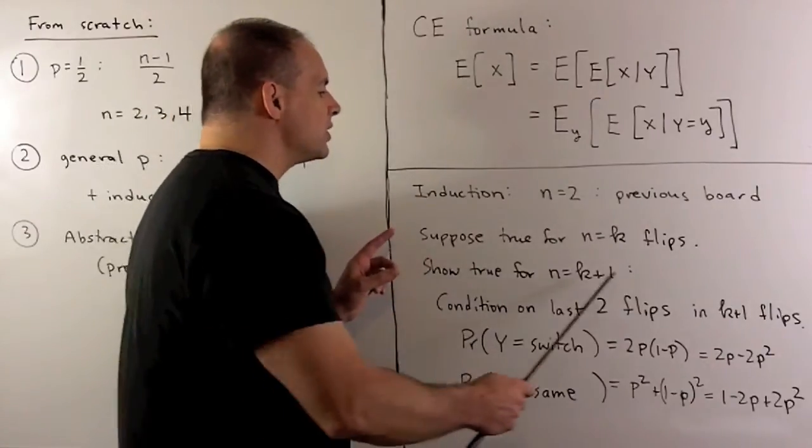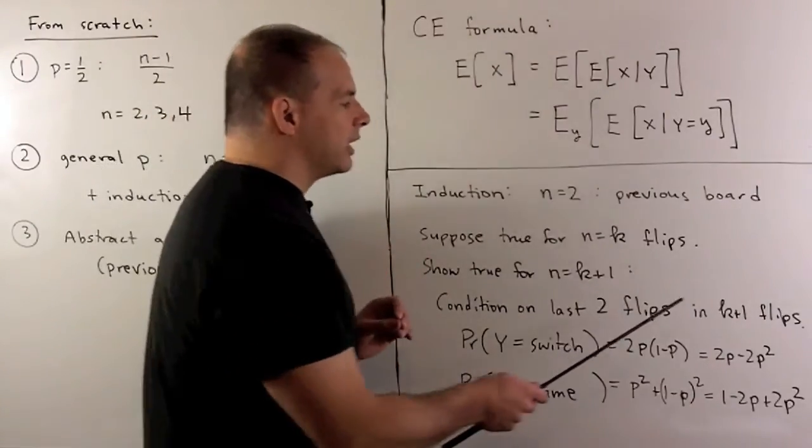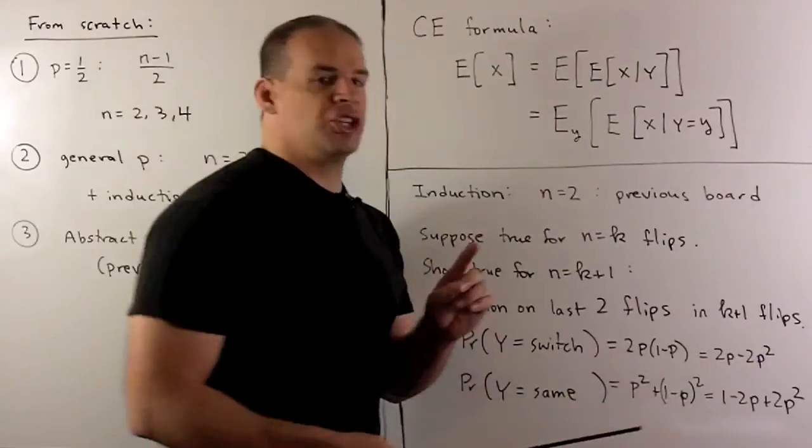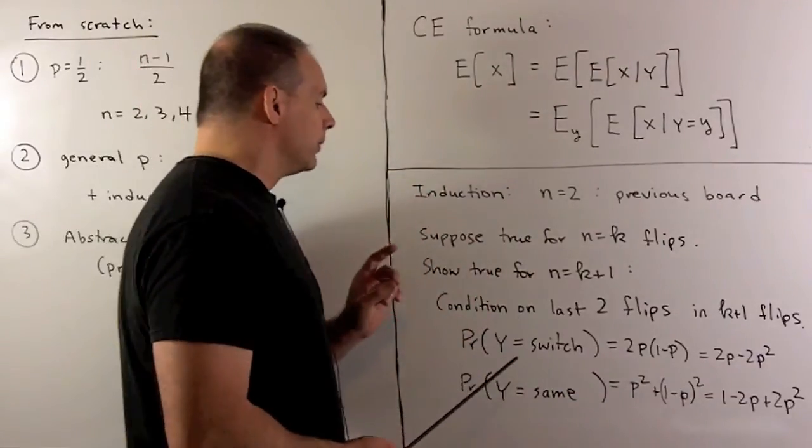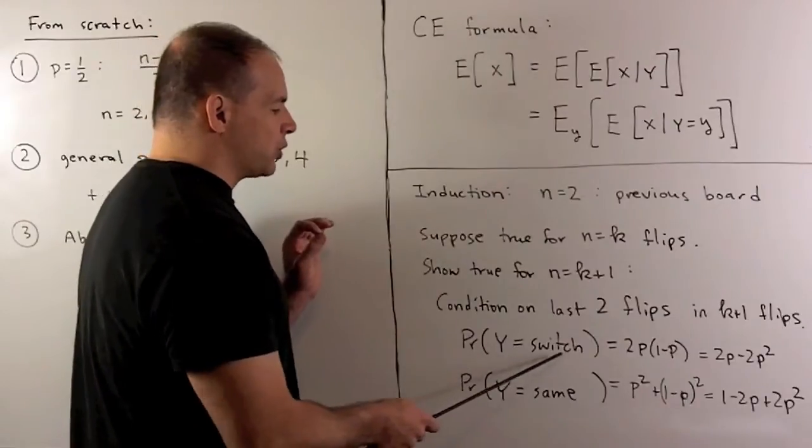Now, to do this, we're going to take our K plus one flips and condition on the last two flips. So, note, if those last two flips are a switch,